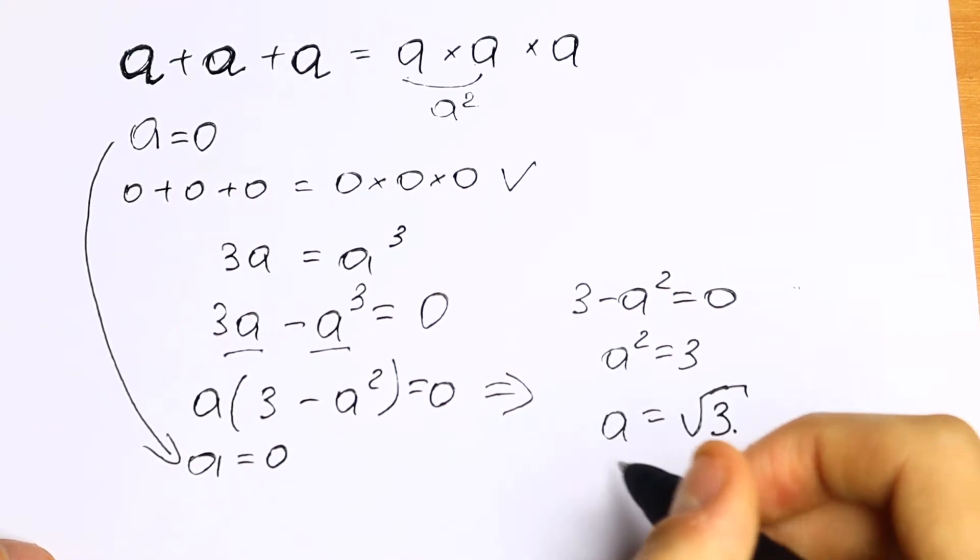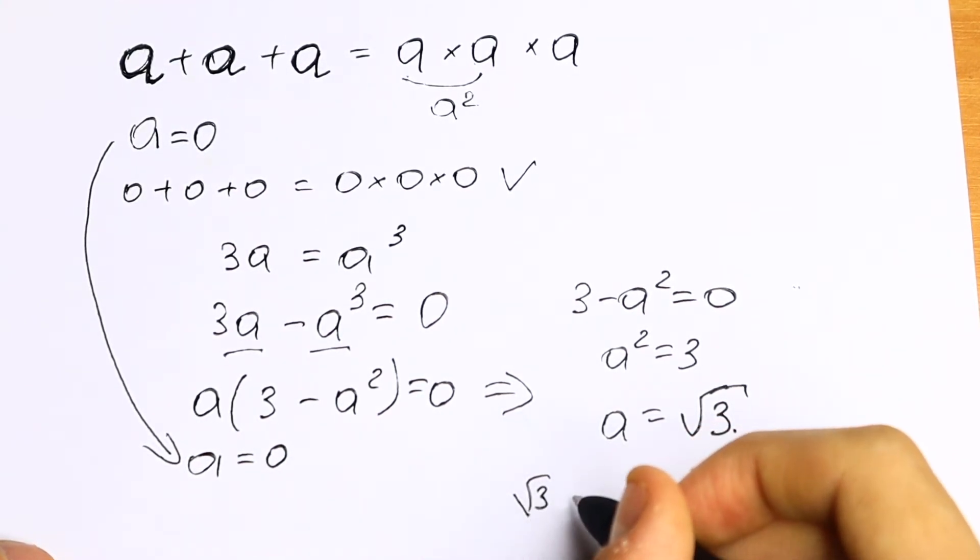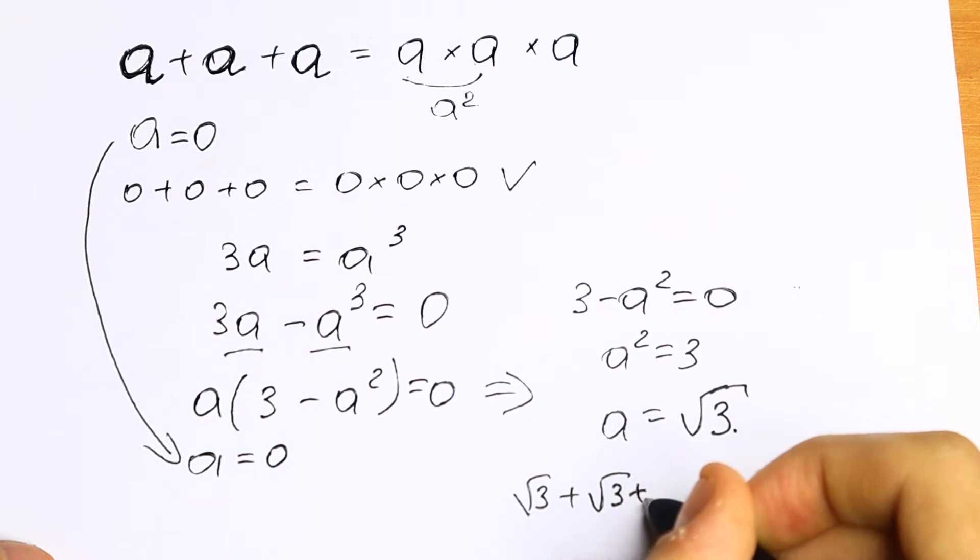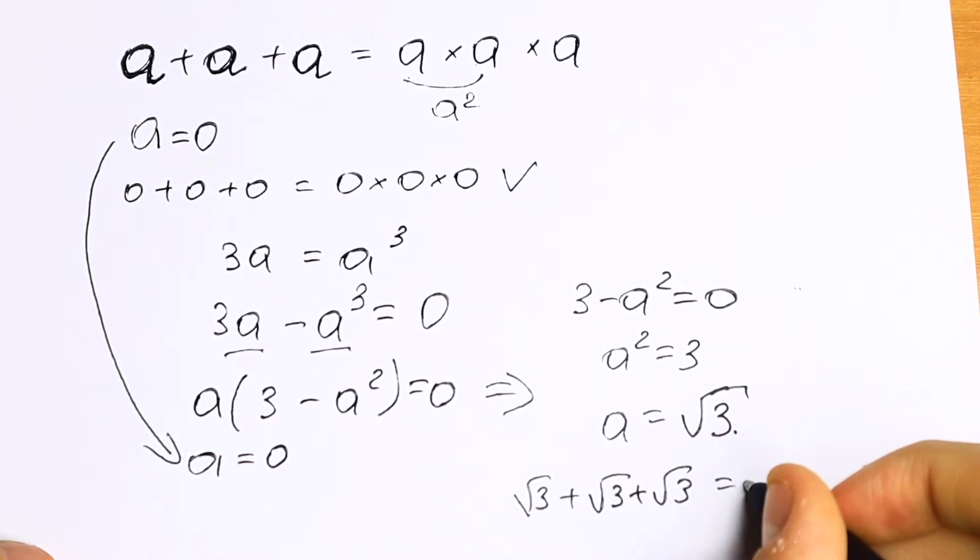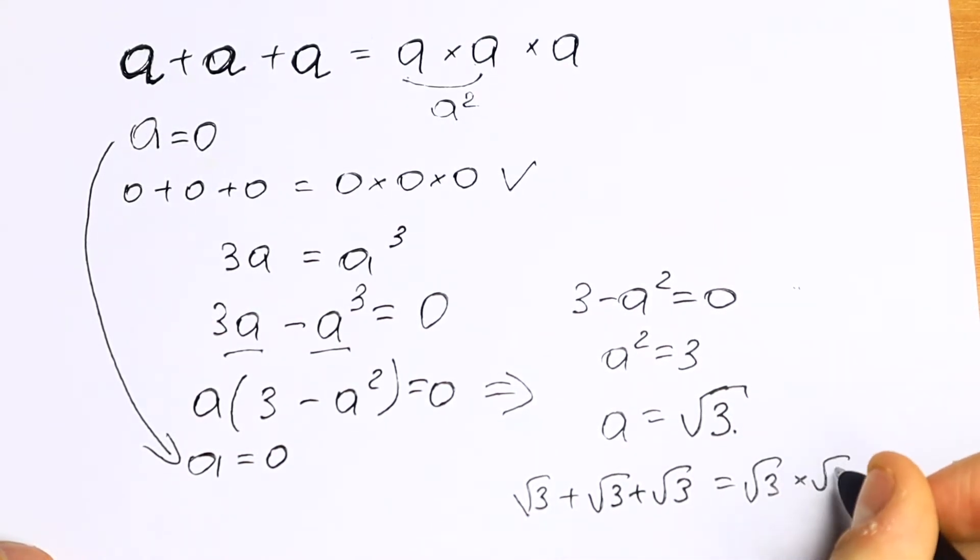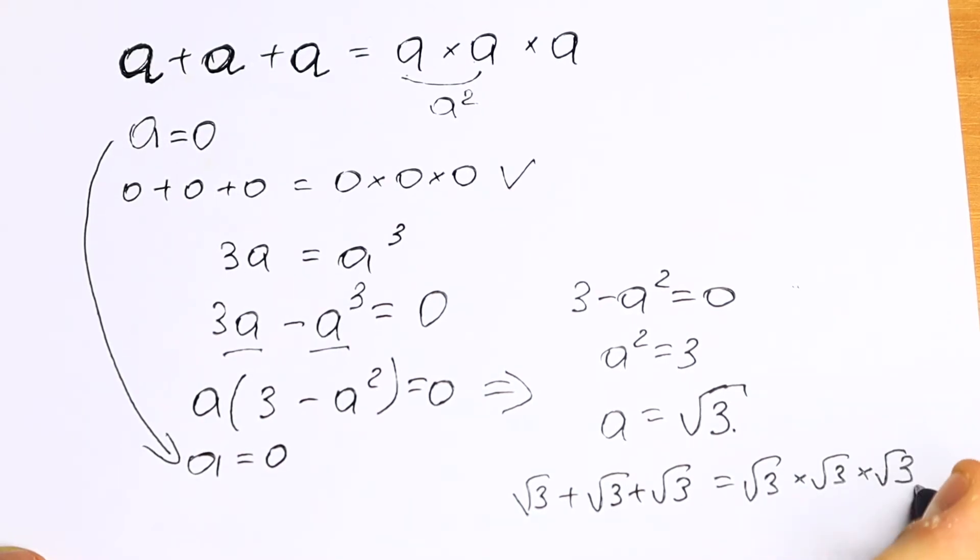So let's check this root. What we will have? Square root of 3 plus square root of 3 plus square root of 3 equal to the product square root of 3 times square root of 3 times square root of 3.